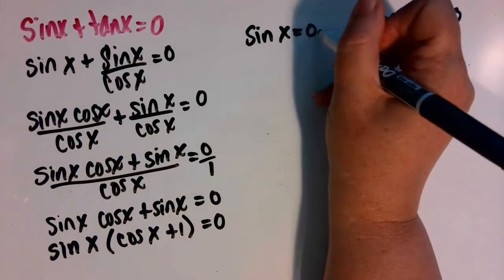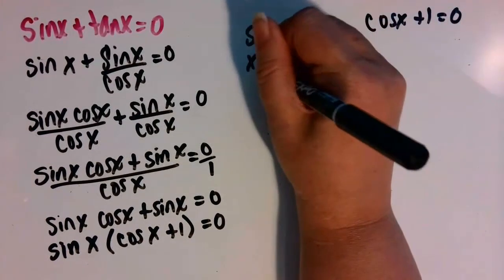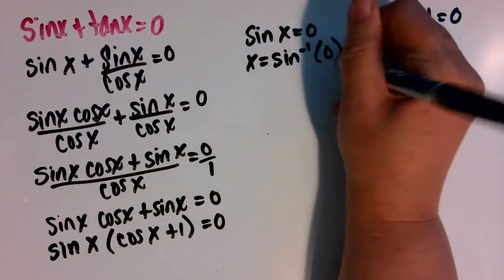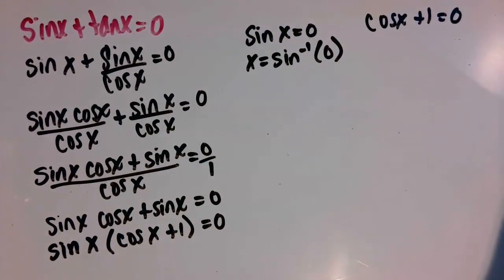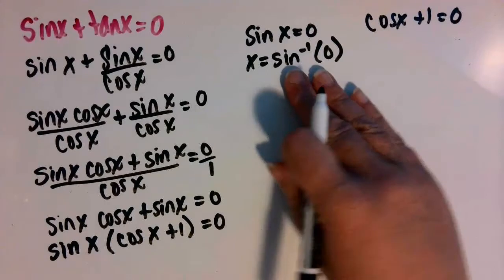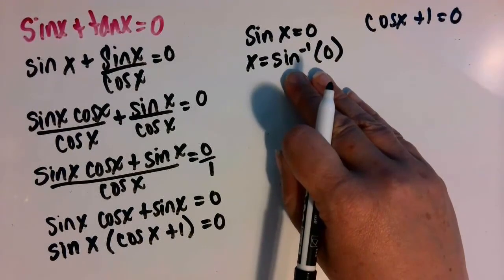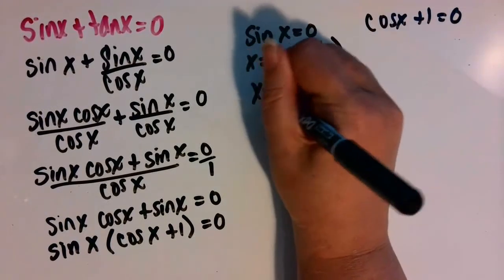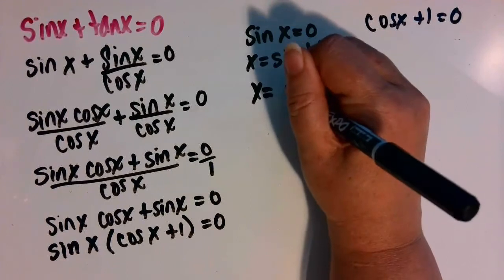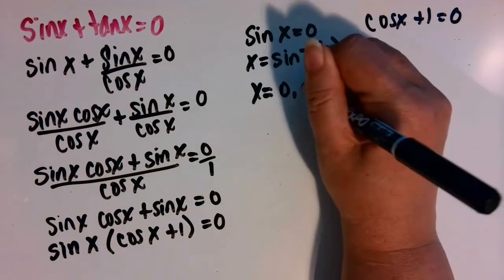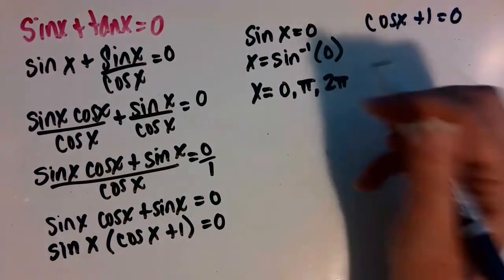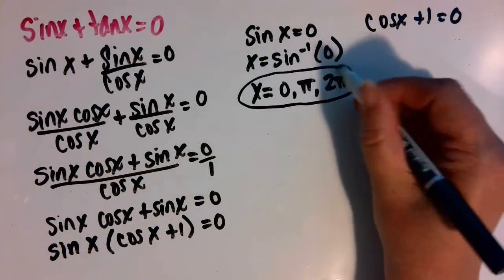So using the inverse, I can get x by itself, and x then is the arc sine of zero. And that's asking us the question, what angles on the unit circle have a y coordinate of zero? And that occurs at zero, pi, and two pi within one revolution of the unit circle.